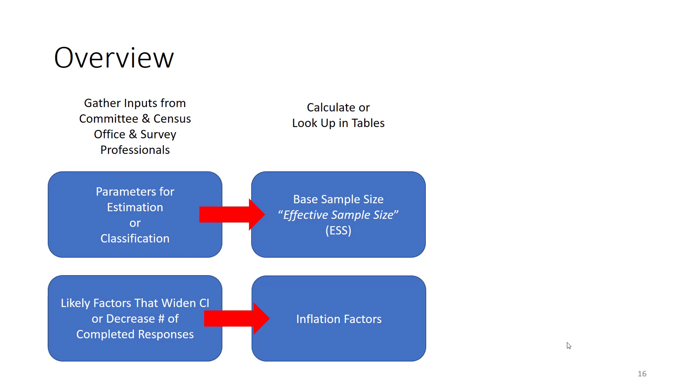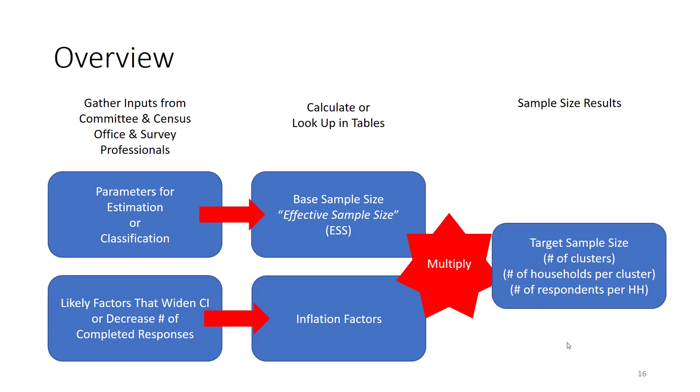The effective sample size, that's the number we would use if it were a simple random sample. And then what are the inflation factors? We'll multiply those things together to get an estimate of the target sample size. How many clusters do we need to go to? How many households do we need to visit? How many teams do we think it's going to take to do this job? How many days? And those are the figures that will feed forward to the budget team.